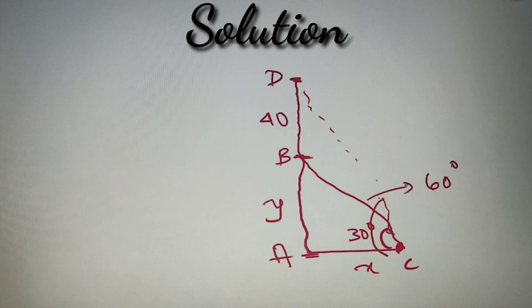Now to solve this question, we can first assume the triangle ABC and then ADC and then apply the properties of trigonometry. We know that tan theta is equal to perpendicular by base. So in triangle ABC,